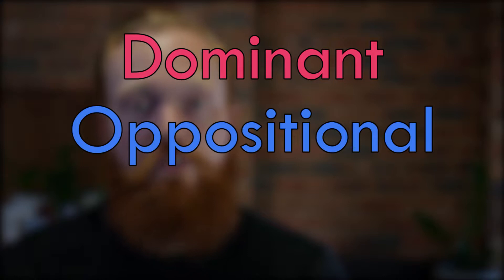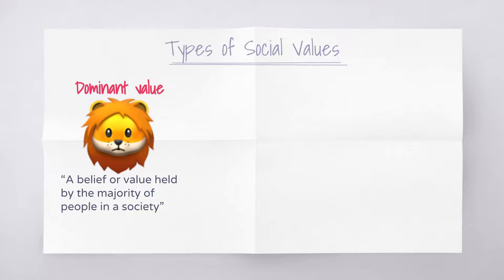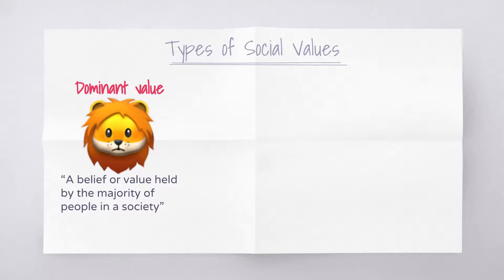The three types of social values you need to know the definition of are dominant values, oppositional values and emerging social values. The dominant value in society is the belief that is held by the majority of people in that society at that time. That majority might be 51% or it might be 99% — whatever it is, the dominant value is the one held by the most people.